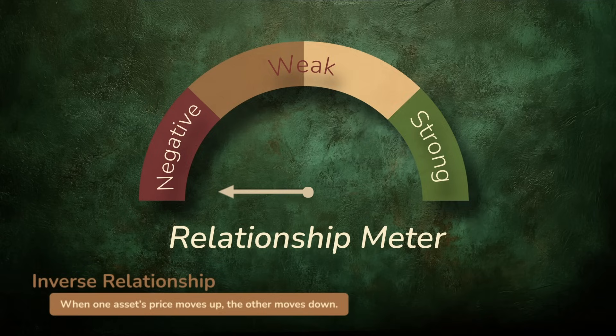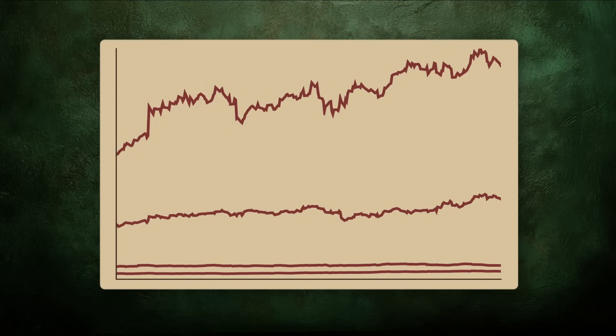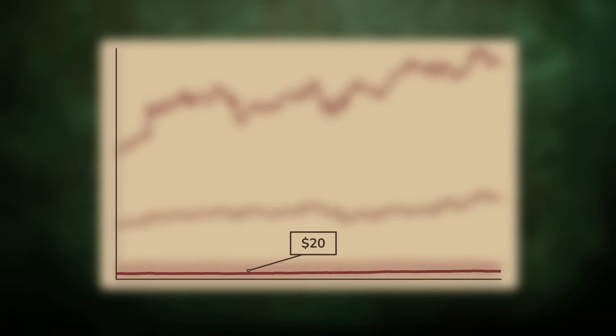There are mathematical ways to capture this, but you have to use caution. Look what happens when we plot all four stocks on the same chart. The differences are dramatic. One stock trades around $20, another around $500. Any direct measurement of their relationship will be dominated by these huge scale differences, not by how closely they actually move together.